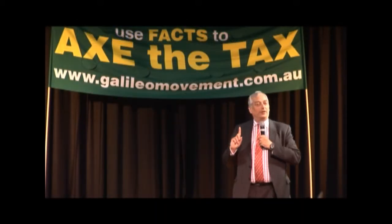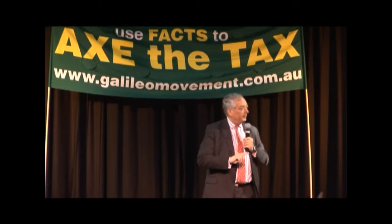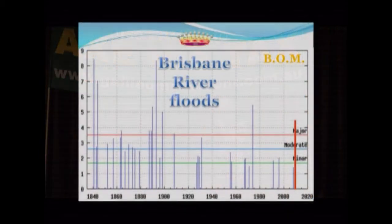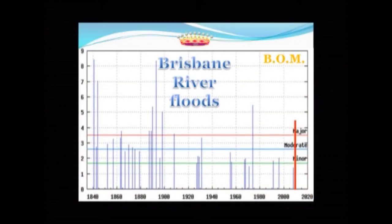It's very interesting. And so that led to the question: how often have these major floods, as defined by your Bureau of Meteorology, occurred? I thought I would have a look and get the data. This is how we climate sceptics do things — we get the data. We don't just wave our arms and say 'oh, it's going to be terrible.' We find out. Between 1840 and 1900, there were eight major floods of the Brisbane River. Between 1900 and 2011 — a period nearly three times as long — there were only three major floods.